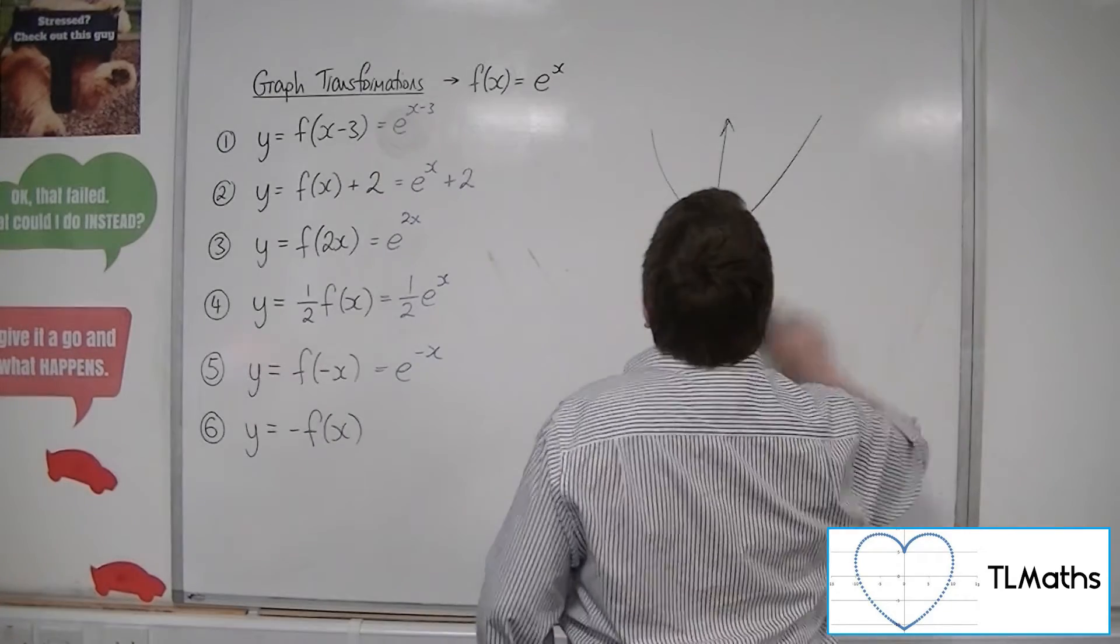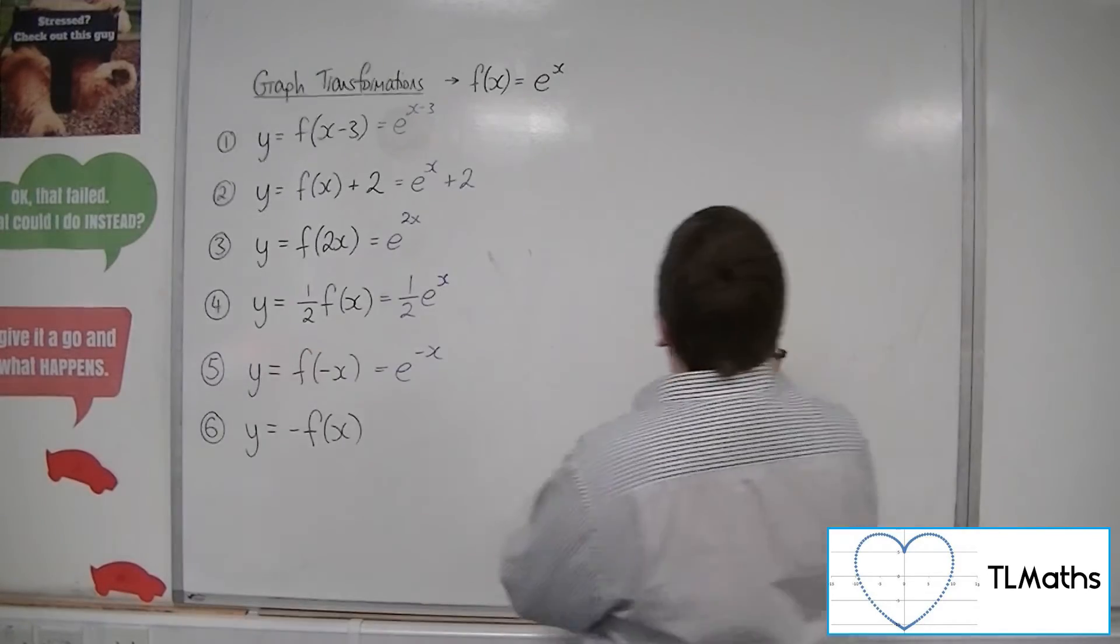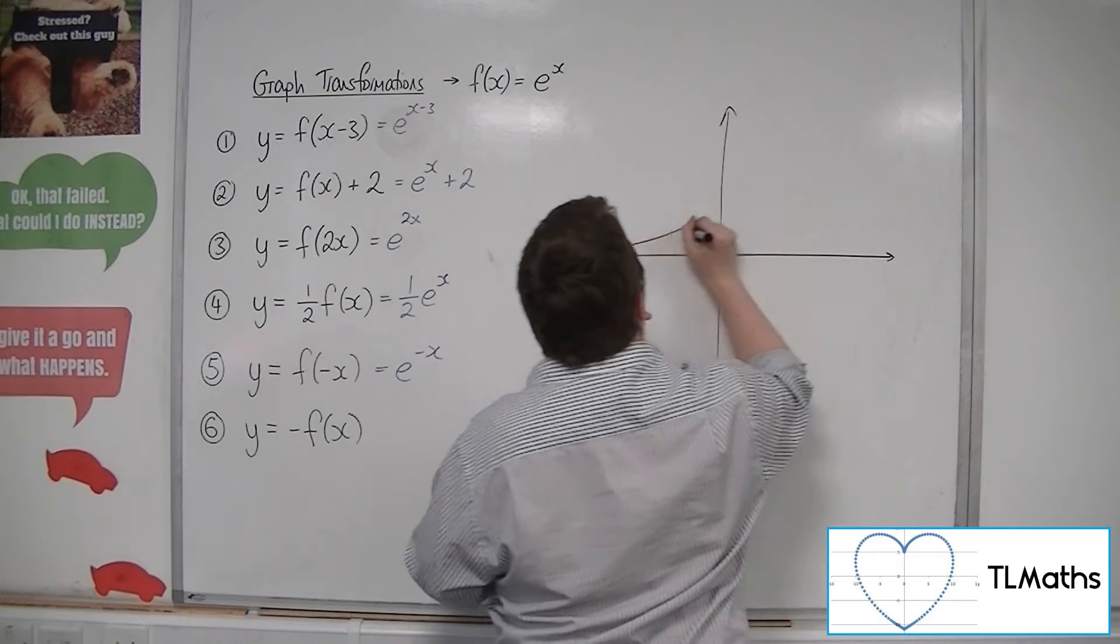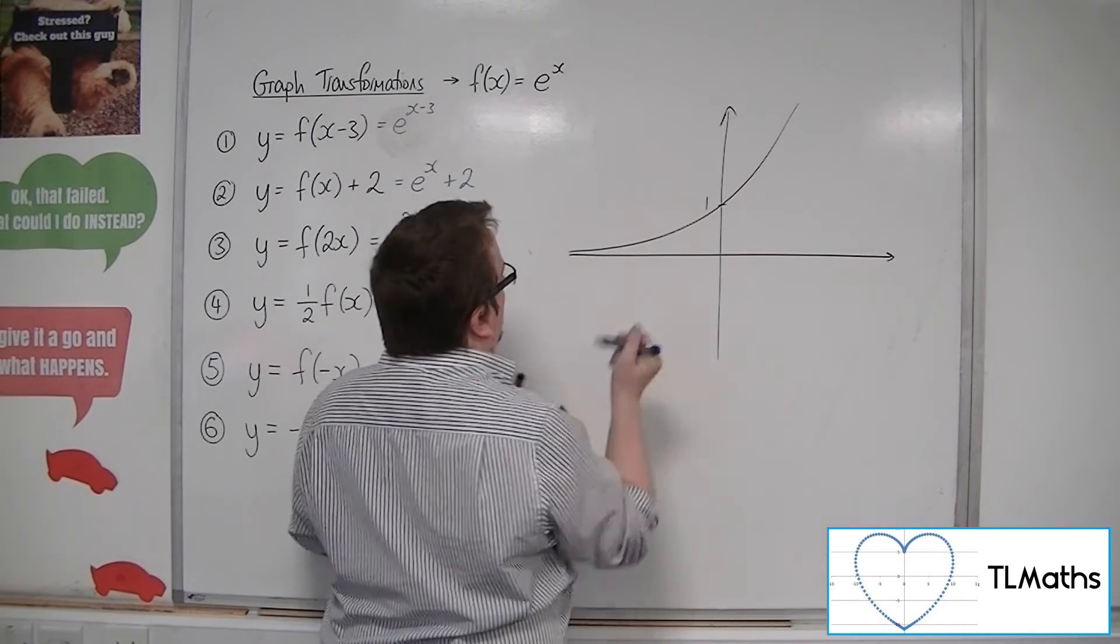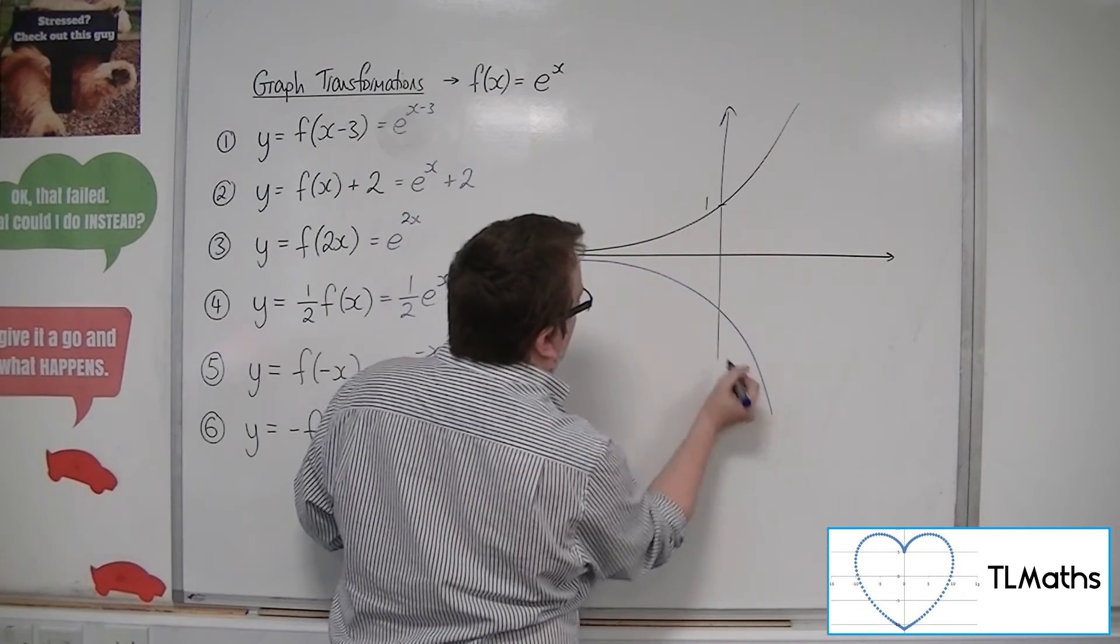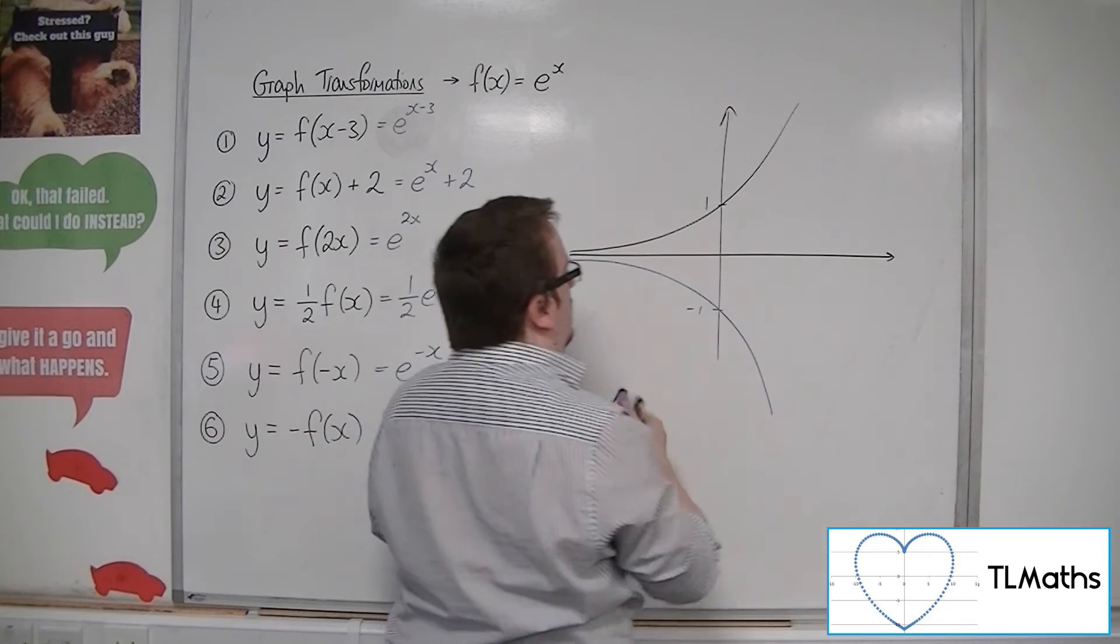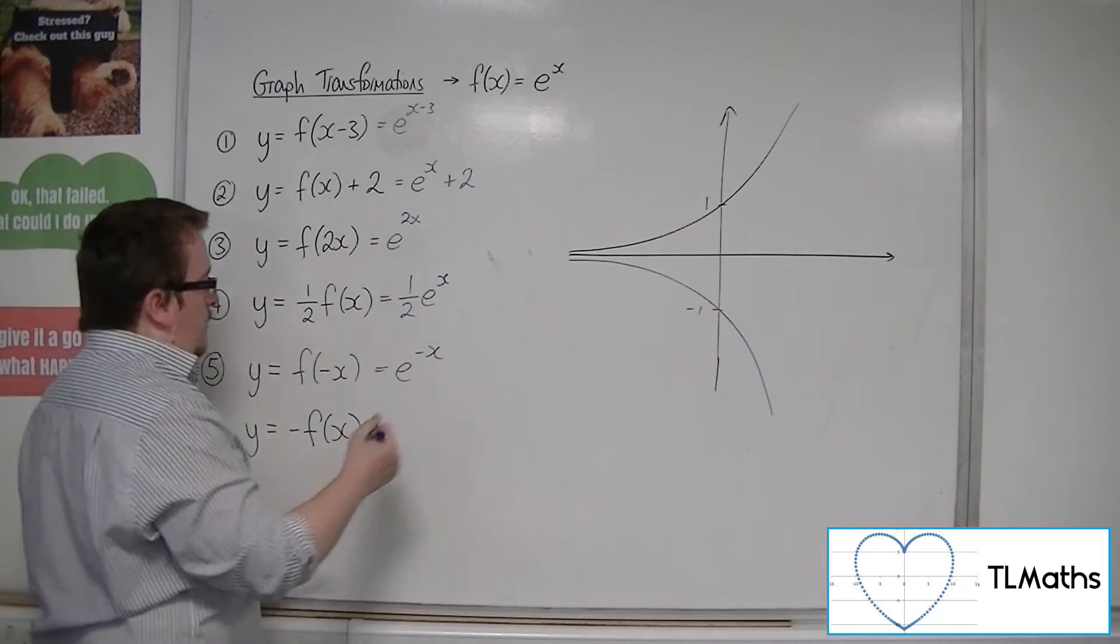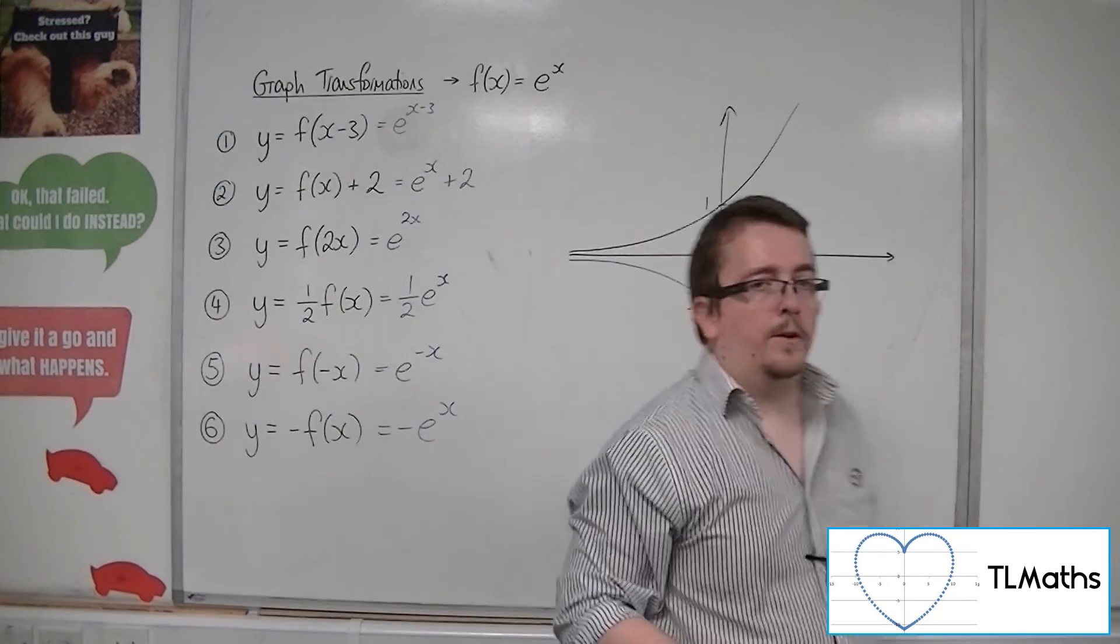And then, finally, minus f of x is a reflection of the x-axis. So, there's f of x. And then, minus f of x would look something like this. Going through minus 1 on the y-axis. And that would be the same as sticking a minus sign out the front of the exponential function.